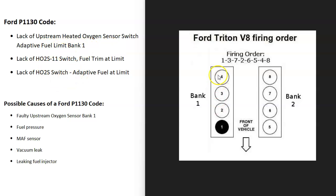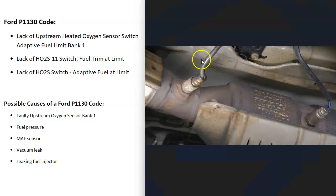Basically what this means is that on the bank one side of the engine — which is always the side with the number one cylinder — there's an upstream oxygen sensor on the exhaust. It's reading whether the engine is running rich or lean. If there's too much gas going into bank one it reads rich; if there's too much air it reads lean. There's a range the air and gas should be burning at for the engine to run properly.